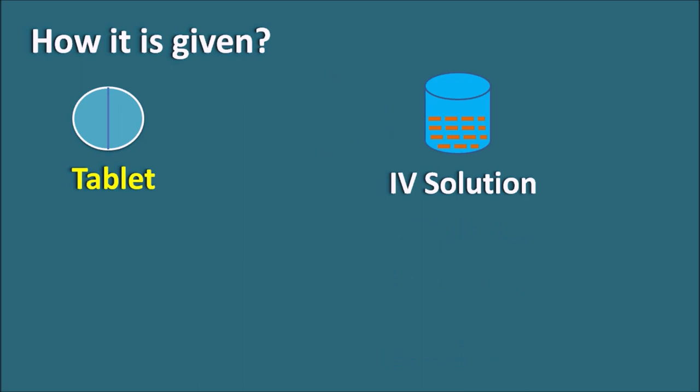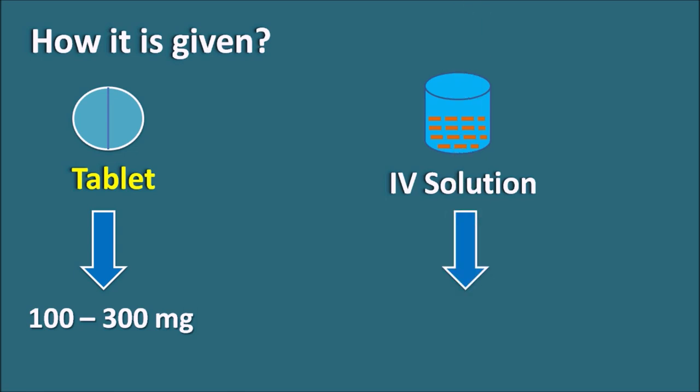Labetalol is available as tablet form as well as IV solution. As a tablet, it is available in different doses from 100 to 300 mg. As an IV solution, it is available as 5 mg/mL. This drug is particularly used to treat hypertension during pregnancy and can also be given as an IV solution to treat severe hypertension under emergency conditions.